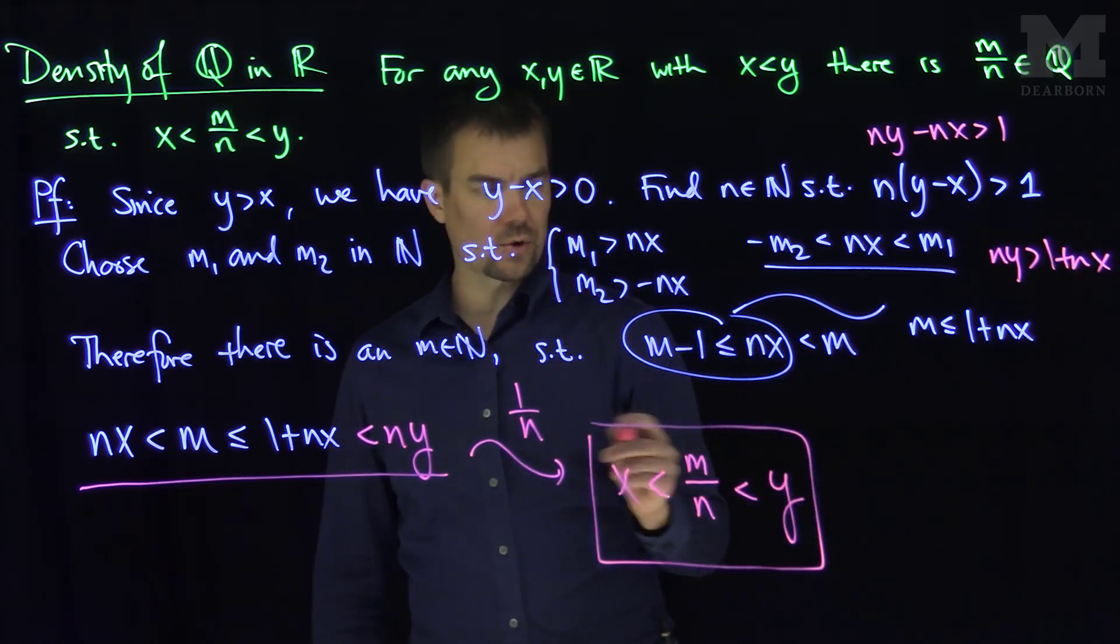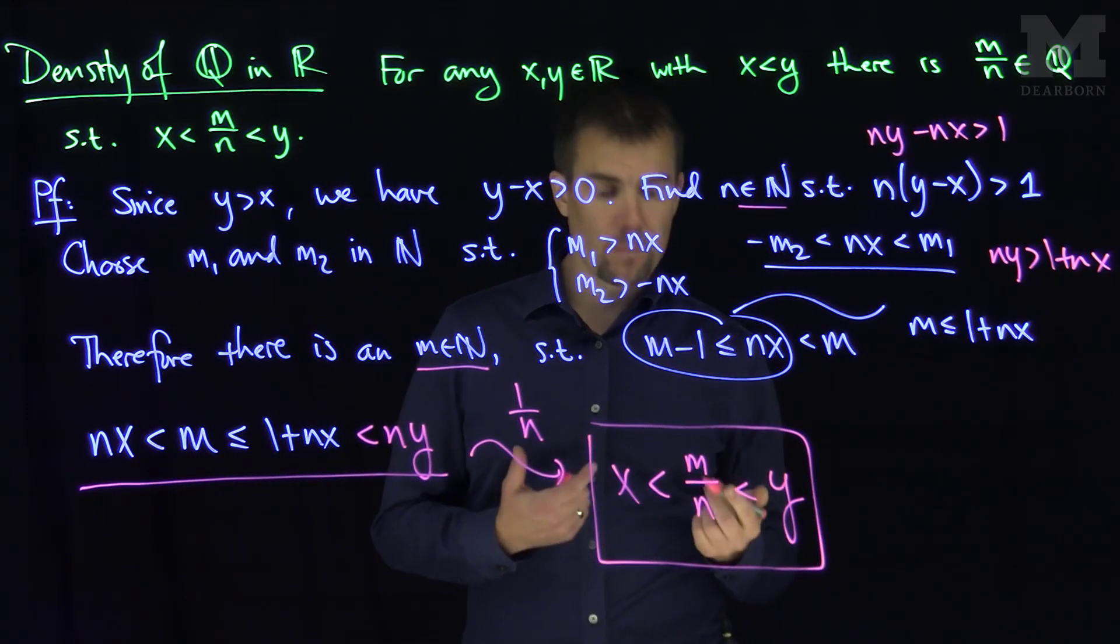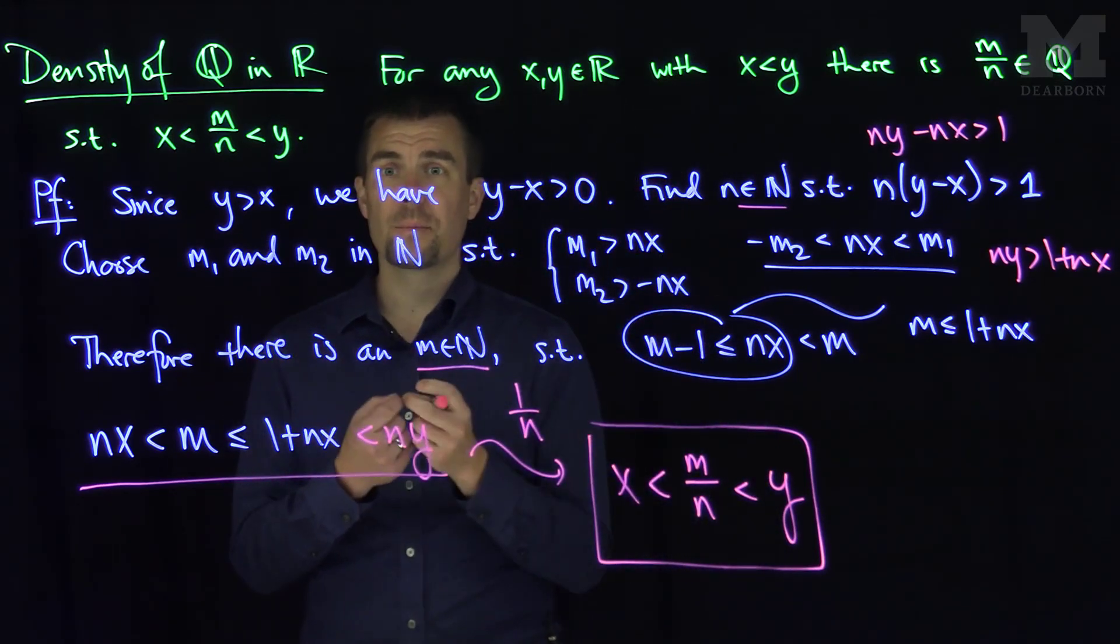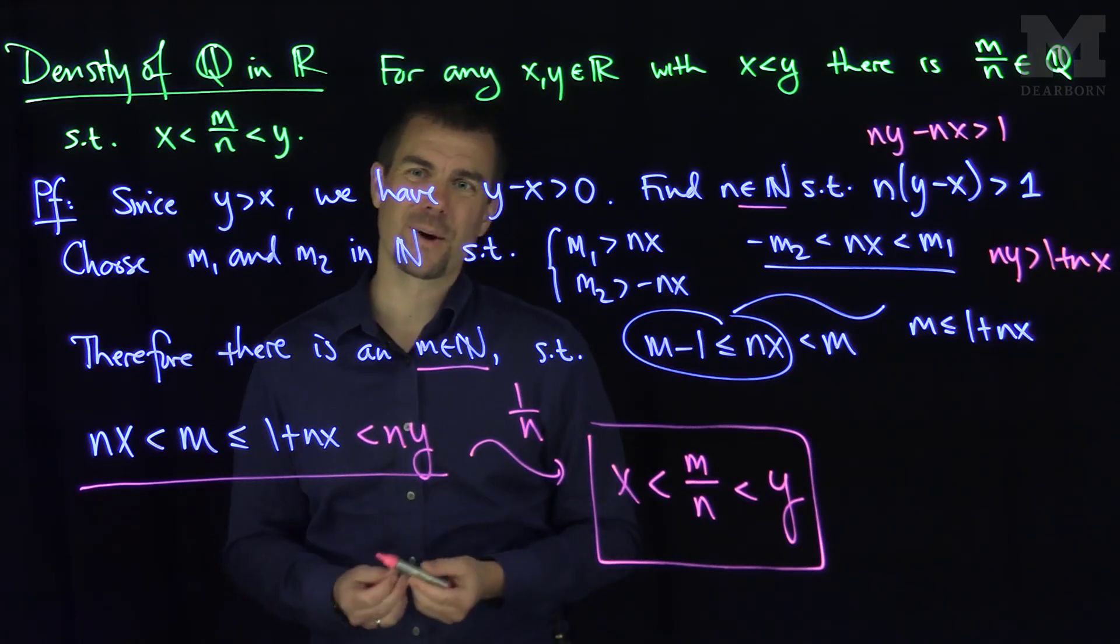So the construction over here gives me the existence of an m and the existence of an n, both of them come from the Archimedean principle that shows that there's a rational number between any two real numbers, and that is equivalent to the notion of Q being dense in R. Thank you very much.